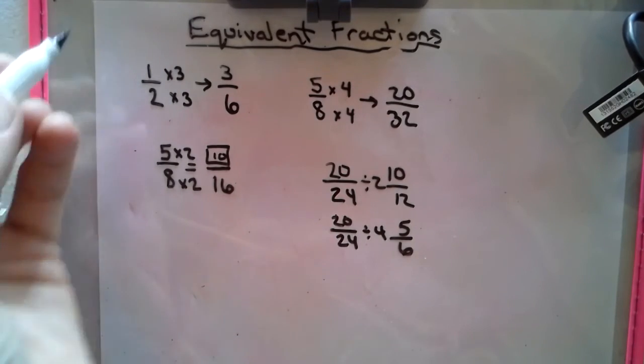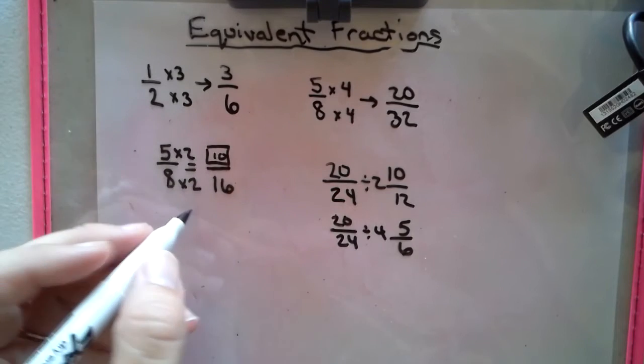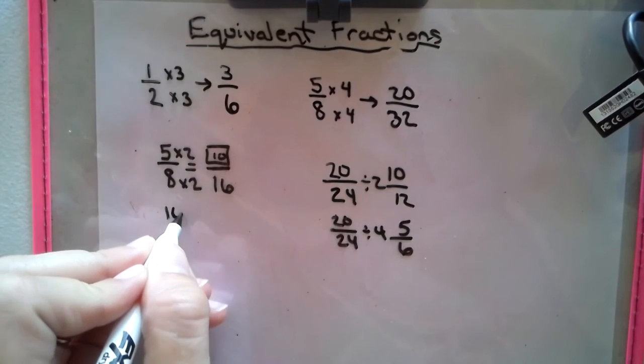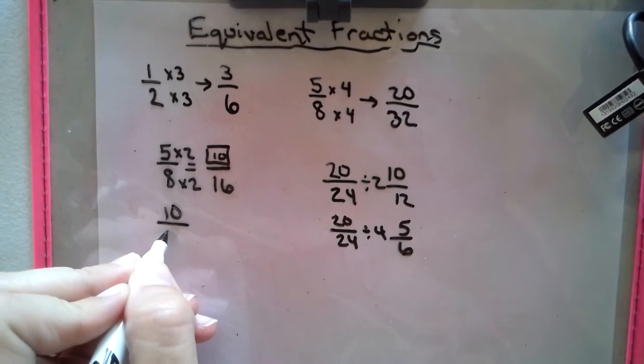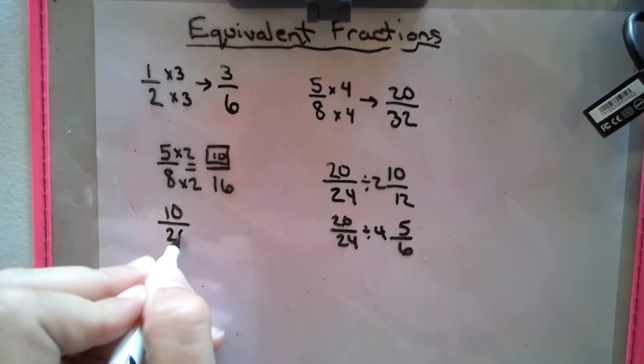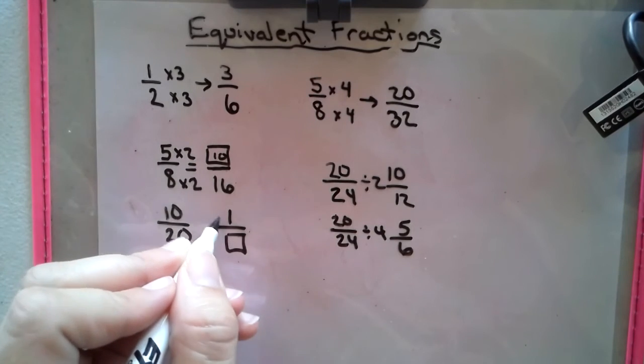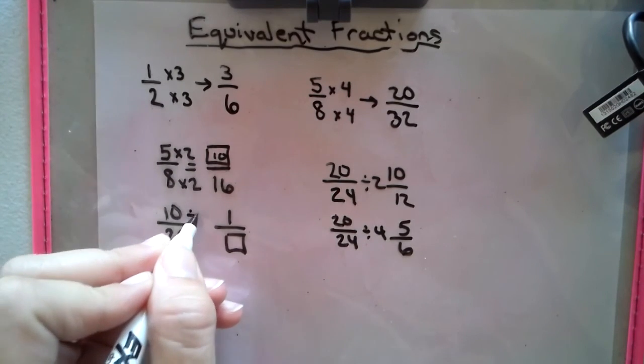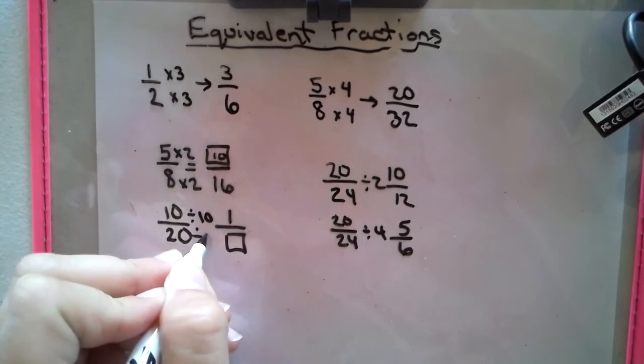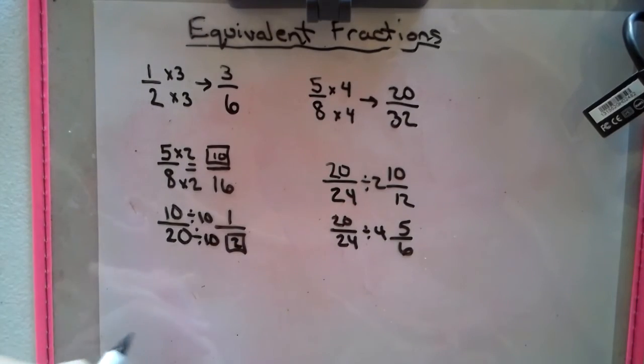Equivalent fractions can also, one more way to look at this, if we started with maybe 10/20 and we get to 1 over something, we say how do we get from a 10 to a 1? We could divide by 10, so if we divide by 10 we would get the missing piece of a 2.